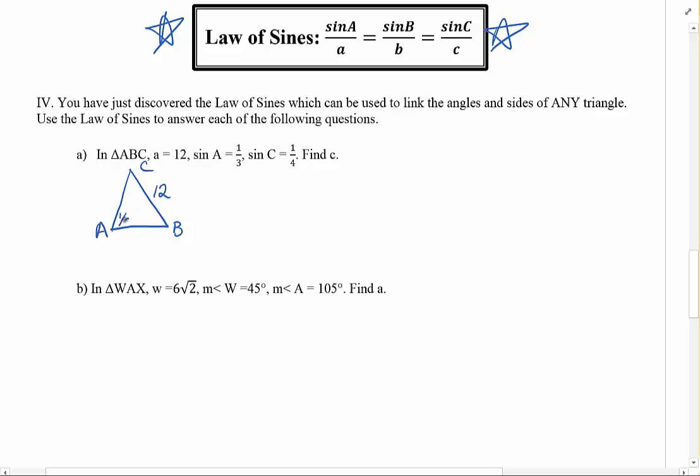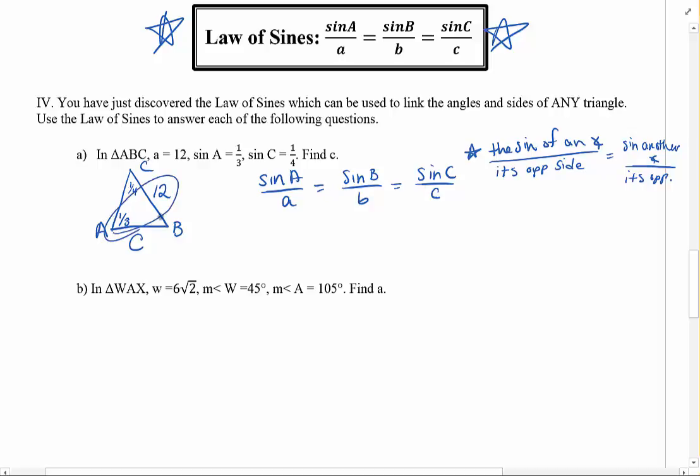Sine of A is a third. Now I don't know what angle A is, but I know what sine is a third, so I'm going to write it in there just as a placeholder. Sine C is a fourth. Okay, find C. Well, the law of sines says sine A over A equals sine B over B equals sine C over C. Now what does that really mean? In layman's terms, this means the sine of an angle divided by its opposite side is equal to the sine of another angle over its opposite side. So it doesn't matter which of these two you use, as long as you use an angle and its opposite side.